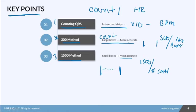Most nurses use the QRS counting method because it's easiest — just grab a six-second strip and multiply by 10. But if a patient has an irregular heart rhythm, or you're in doubt about the rate, always go listen to the apical pulse for a full minute to get an accurate reading.